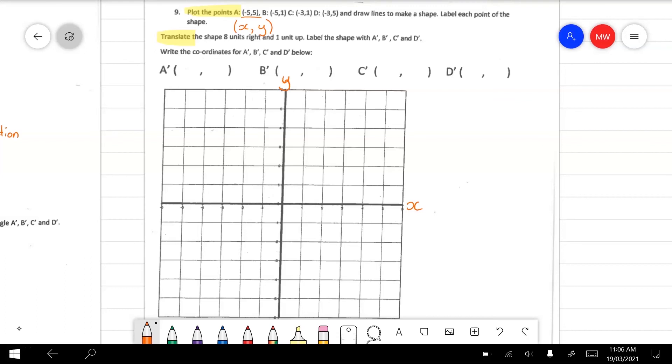So the first point, point A, is at minus five, five. I'm getting that from here. So what I do is I go across to minus five and then I go up to five. And I put my dot in here. And this will become point A.